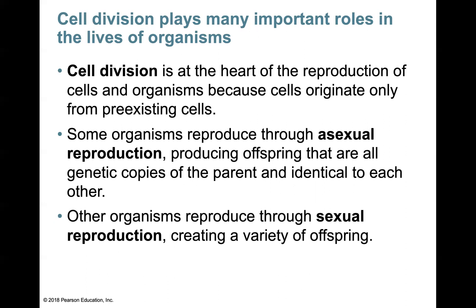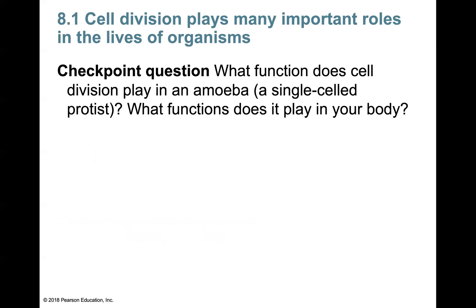Asexual reproduction is a method for copying, almost like cloning, because the offsprings produced are an exact genetic replica of the parent organism. Whereas sexual reproduction requires two parents and generates genetic diversity in its offsprings. Cell division plays a role in sustaining the lives of organisms. Consider what function cell division plays in an amoeba, a single-celled protist, and what function it plays in your body. Respond to this in your notes.